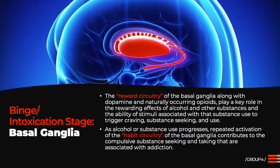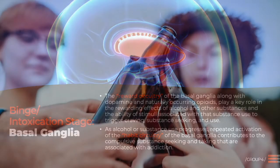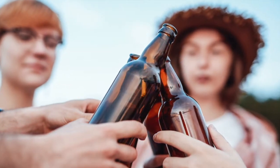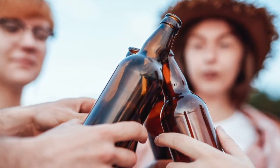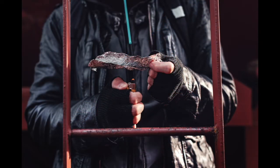A person learns to associate the stimuli present while using a substance — including the people, places, drug paraphernalia, and even internal states such as mood — with the substance's rewarding effects. Over time, these stimuli can activate the dopamine system on their own and trigger powerful urges to take the substance. The dorsal striatum is involved in habit formation. The release of dopamine, along with activation of the brain opioid systems and glutamate release, can eventually trigger changes in the dorsal striatum, strengthening substance-seeking and substance-taking habits as addiction progresses, ultimately contributing to compulsive use.